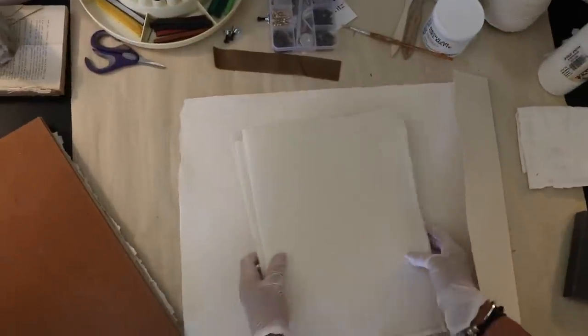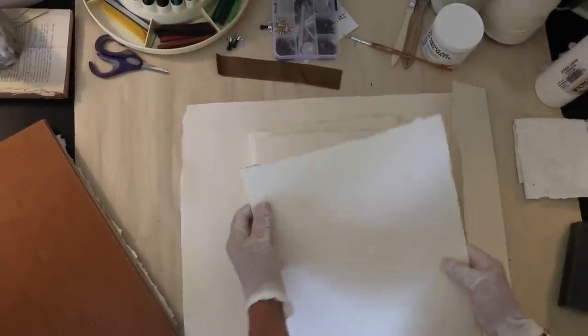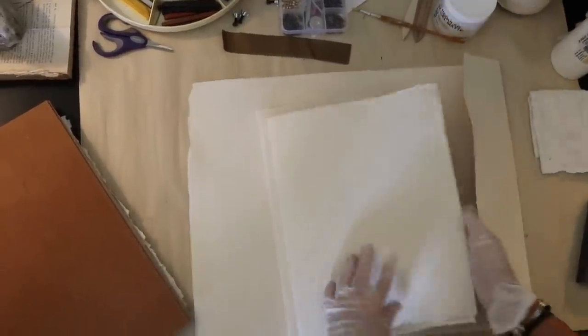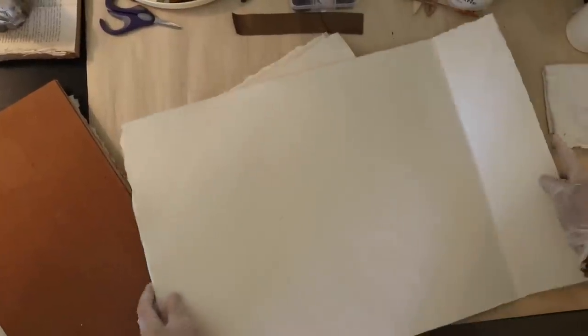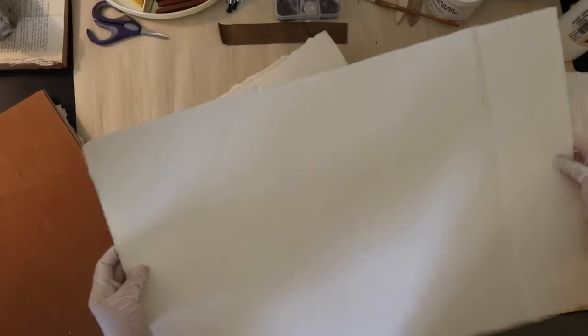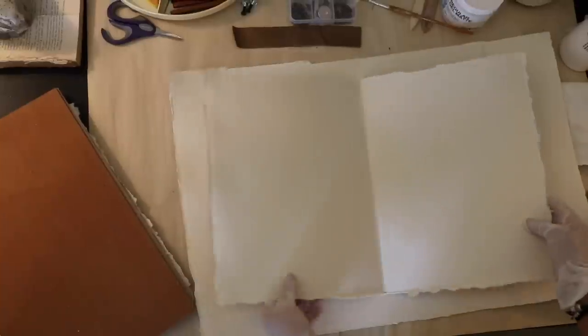Now, while we wait for that to dry, let's talk about the pages. Now the pages I made for the other journal were from Fabriano sheets that were 22 by 30, which is huge. And I've showed those to you before. I think we use them in the master board video. Anyway, so they had to be cut down. And so we're going to cut this up and you can make your sheets out of anything you want.